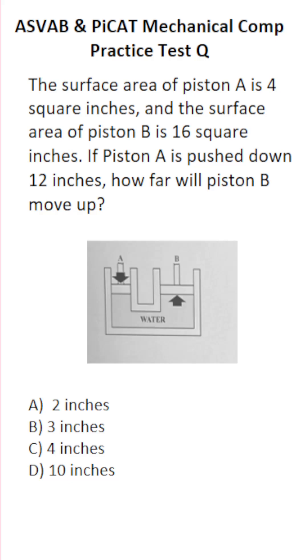According to the problem, the surface area of piston A is 4 square inches and the surface area of piston B is 16 square inches. In other words, piston B has 4 times the surface area of piston A.